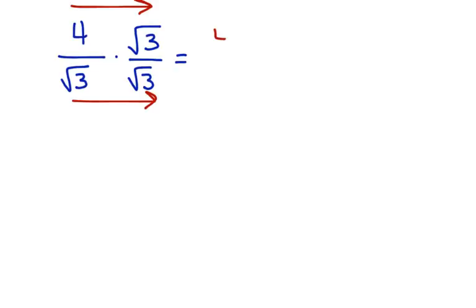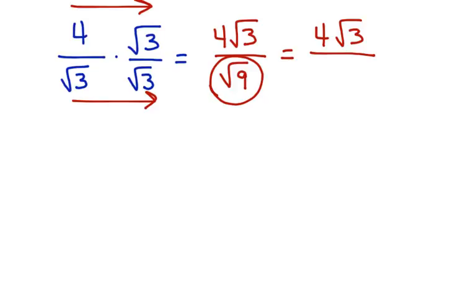4 times the square root of 3 is 4 square root of 3. Square root of 3 times the square root of 3 is the square root of 9. The numerator stays the same. We can't simplify anything there. But in the denominator the square root of 9 becomes 3. This is our final answer and our work is complete.